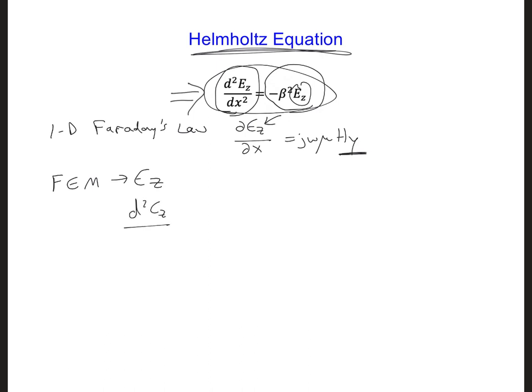And then I'm moving the right one over to the left. So plus beta squared Ez. If this is exactly equal to zero, we'll have a perfect solution. But it'd have to be exactly equal to zero at all positions in space.